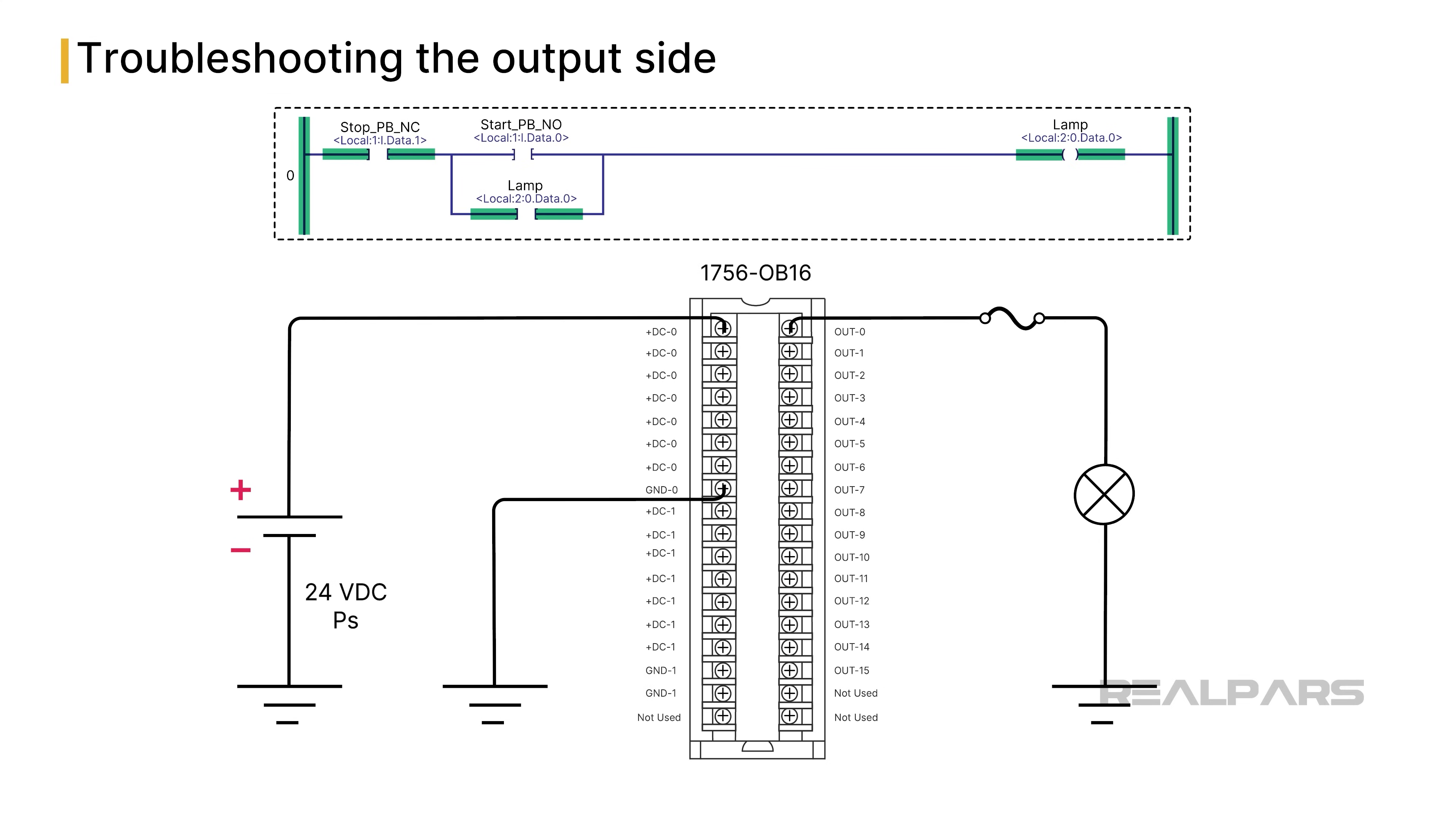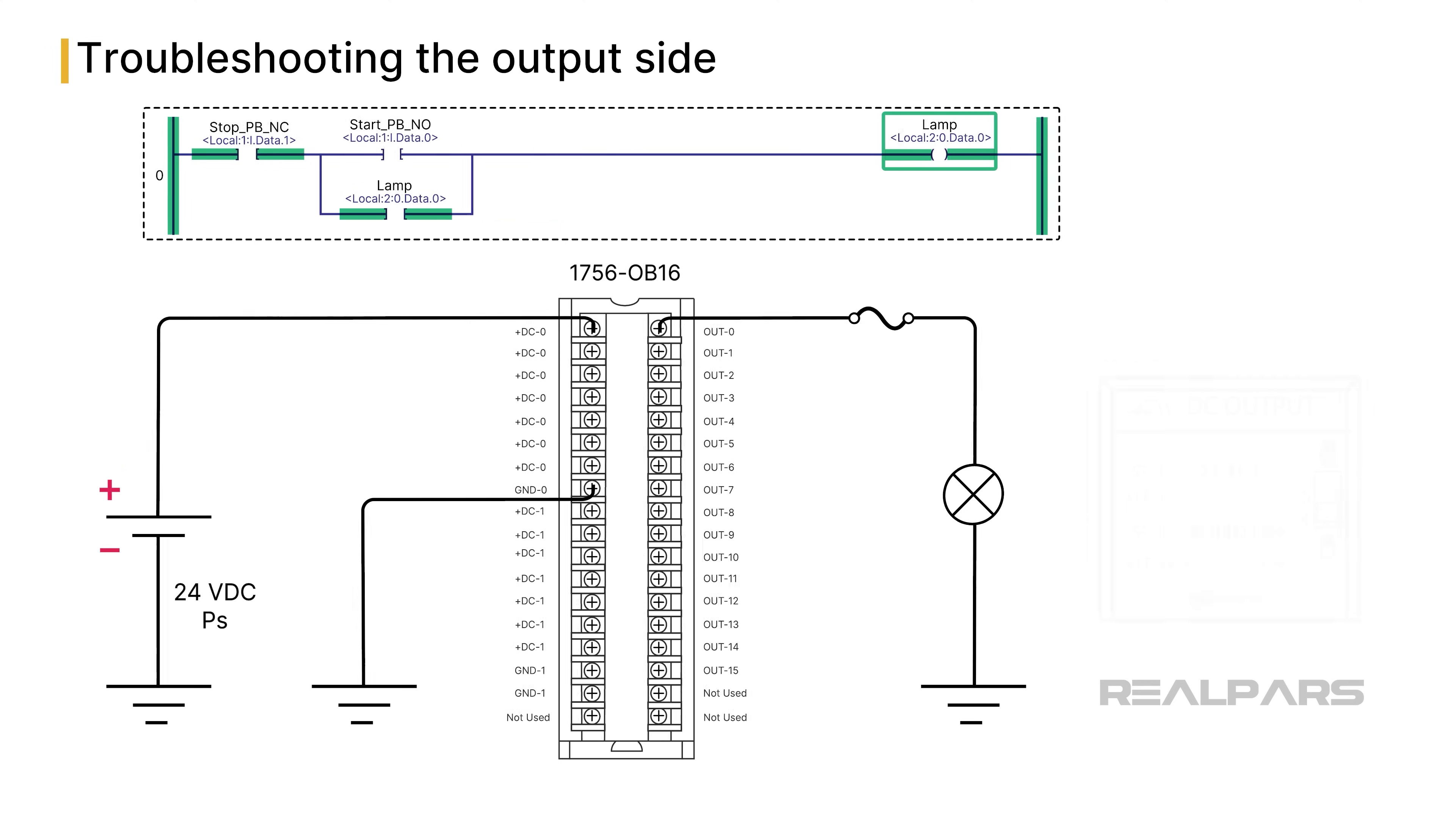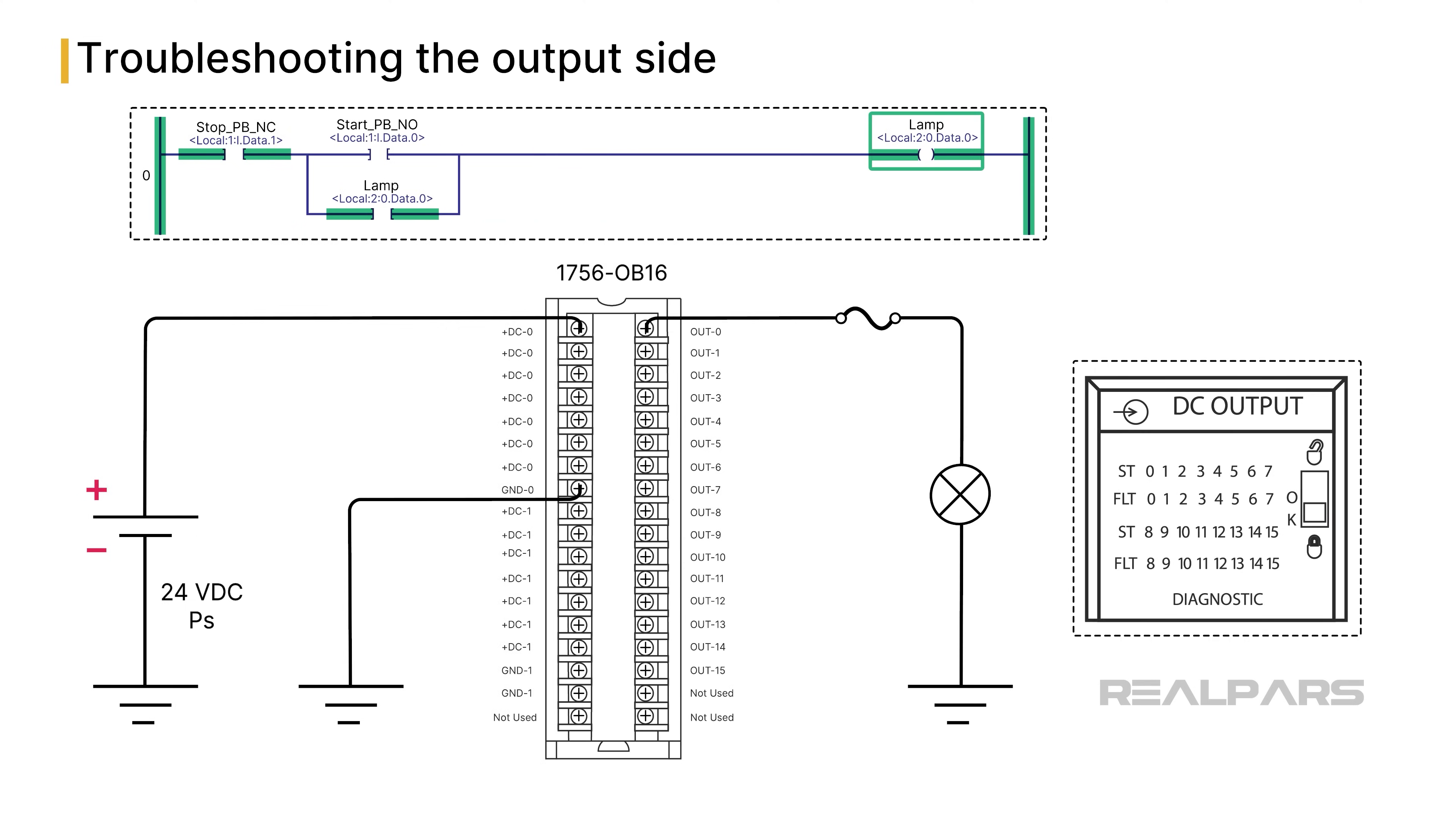Let's peek at the ladder logic program to see how the lamp is turned on. The state of the lamp coil symbol on rung zero determines the condition of the lamp connected to the output module. The 1756-OB16 digital output module has LED indicators that tell whether each output supplies voltage to energize the load. So, under normal conditions, the LED zero and the lamp should be on due to the true condition of the program's lamp coil symbol on rung zero.